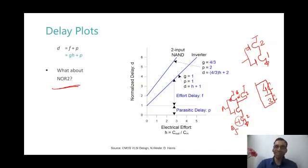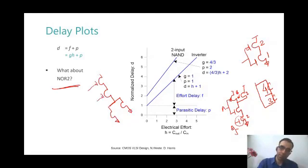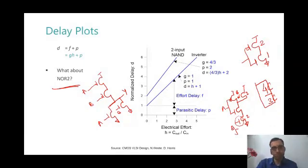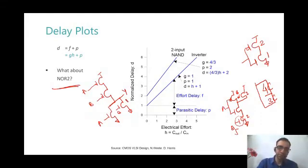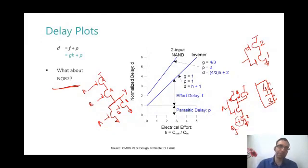For a NOR2 gate: in the worst case there is one NMOS on at a time, so NMOS is sized at 1 (same as inverter). The two PMOS transistors are in series, so they must be doubled to size 4 to match current. The input capacitance is 1 + 4 = 5, giving logical effort g = 5/3 for a NOR2 gate.